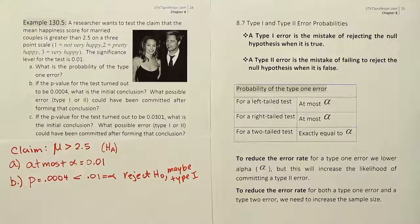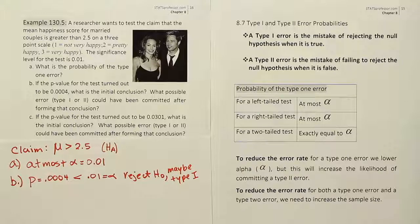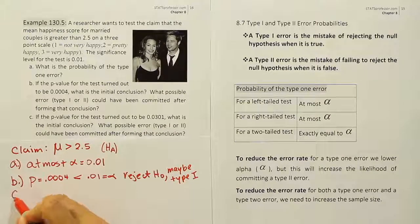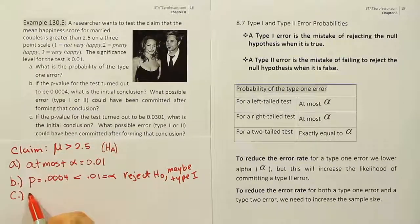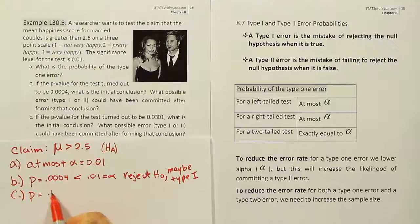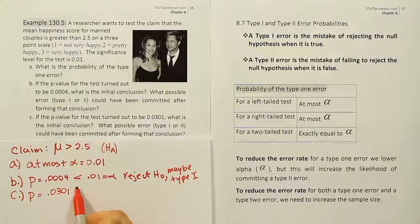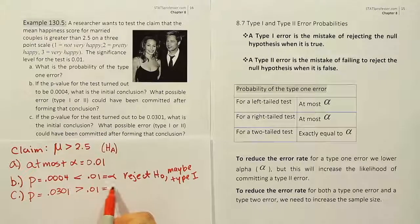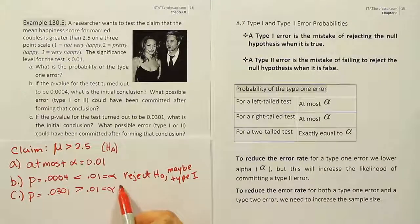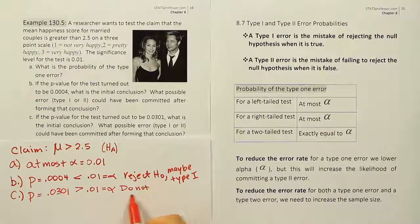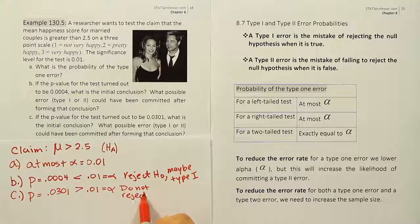All right, part C. If the p-value for the test turned out to be instead 0.0301, what is the initial conclusion? Well, let's think about that scenario now. If your p-value is instead something that's larger, like 0.0301, and that is greater than 0.01, which is alpha, then we do not reject. We do not reject H0.